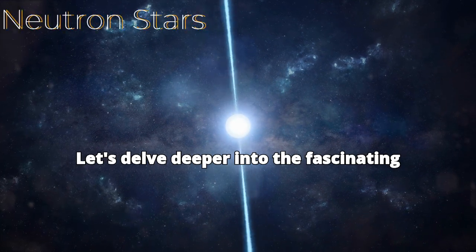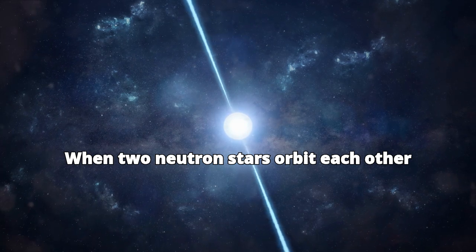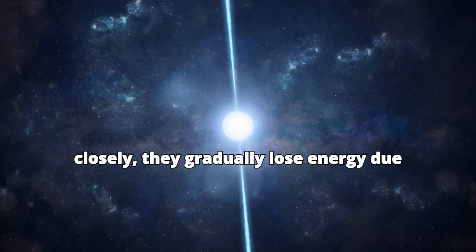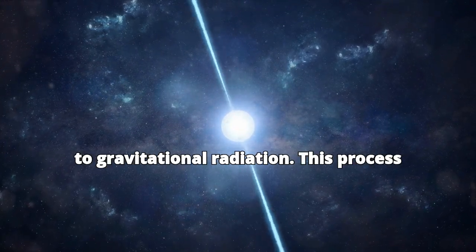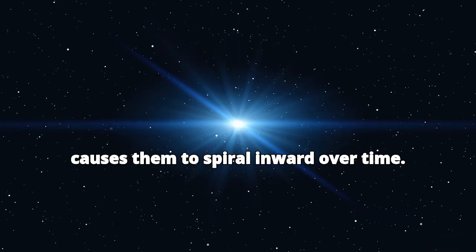Let's delve deeper into the fascinating phenomenon of neutron star collisions. When two neutron stars orbit each other closely, they gradually lose energy due to gravitational radiation. This process causes them to spiral inward over time.